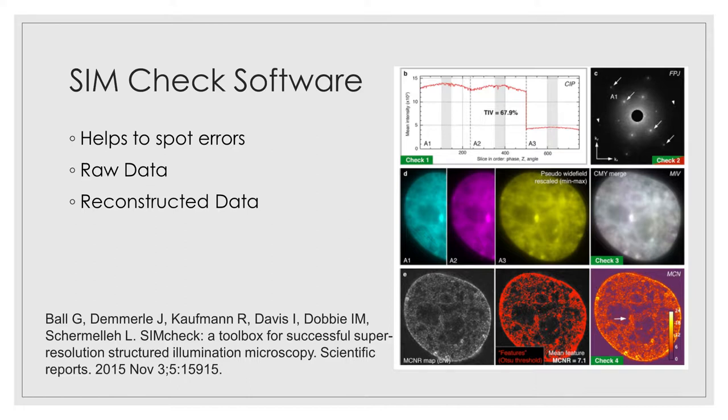SIMCheck is a free plugin for ImageJ, which can help to spot reasons for errors in the image, to see if something is actually an artefact, and to check that you're using the correct parameters. So it can tell you if there's errors in the calibration, or in the way that you did the imaging, or in the sample preparation or reconstruction.